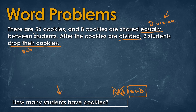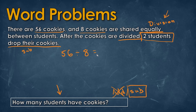Reading the question, there are 56 cookies shared equally among eight cookies per student, which tells us we have a total of seven students. After the cookies are divided, two students drop their cookies, so we do seven minus two, which tells us that five students have cookies — that's our answer.